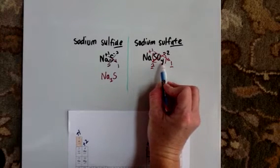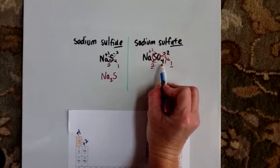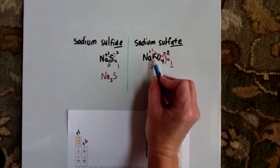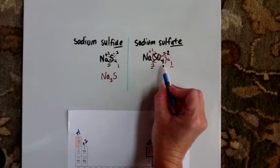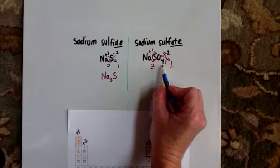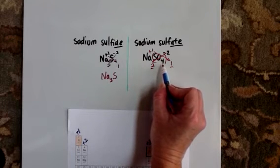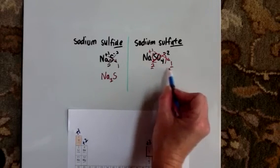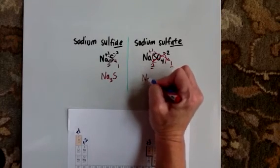We never try to reduce this number in here. That 4 is part of the sulfate. That's one reason I put parentheses around it, just as a reminder that you do not mess with what's inside there. Don't change the 4 on the sulfate. So this does not reduce. I can clean it up, though.